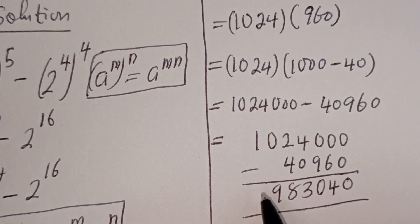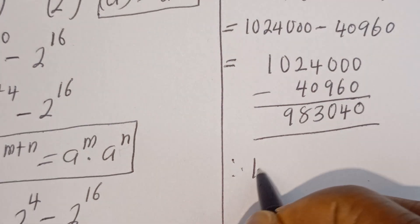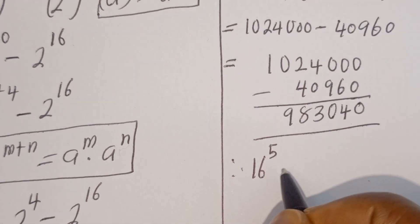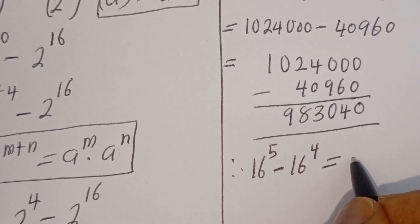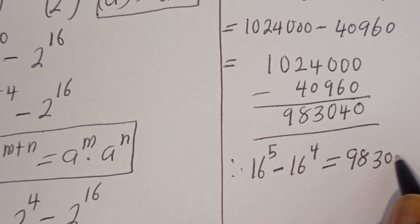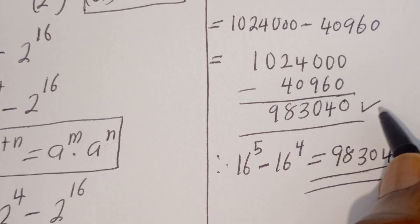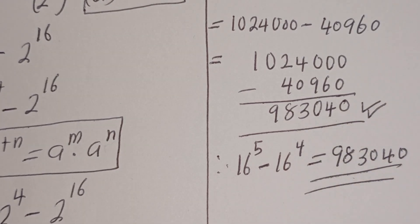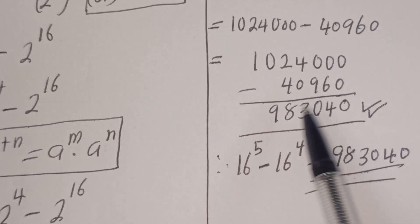So therefore, 16 to the power of 5 minus 16 to the power of 4 is equal to 983,040. This is the final answer. I hope you enjoyed the video. Thank you for watching — please don't forget to like, share, comment and subscribe to my channel.